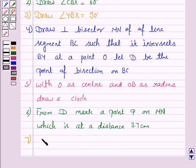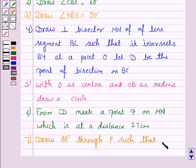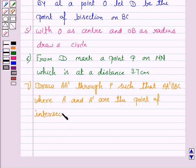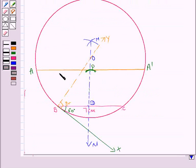Now the next step is to draw AA' through P such that AA' is parallel to BC, where A and A' are the points of intersection of AA' with the circle. So we have drawn a line segment through P.